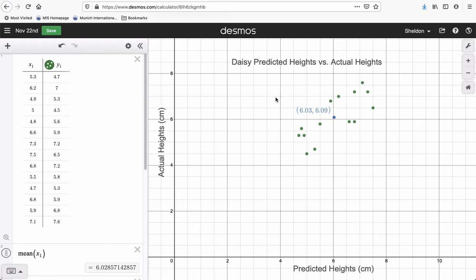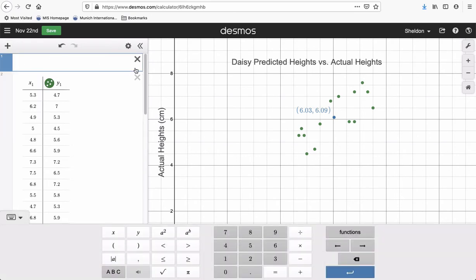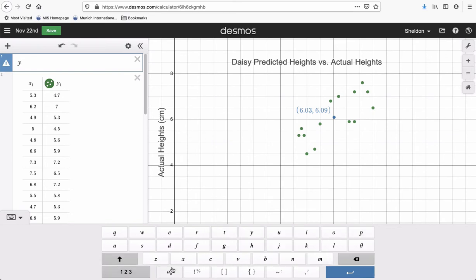So I'm going to do the linear regression line now by clicking on plus here, and expression. When you type in expression, you do Y, then you do the tilde symbol. You can go down to ABC down here, click on tilde. This is the symbol used for regression.